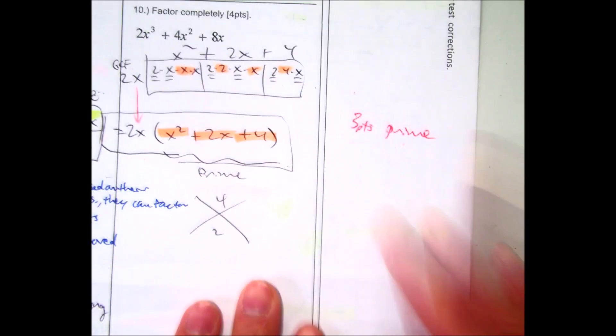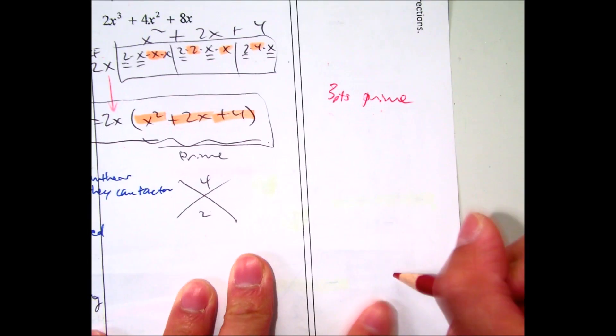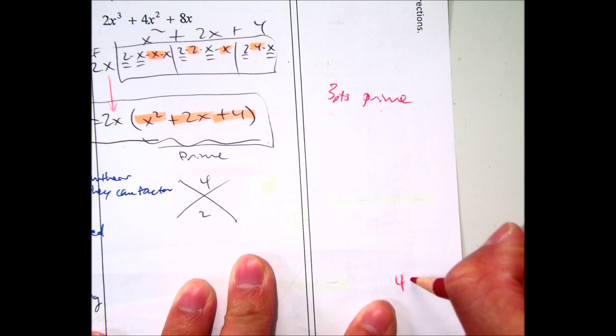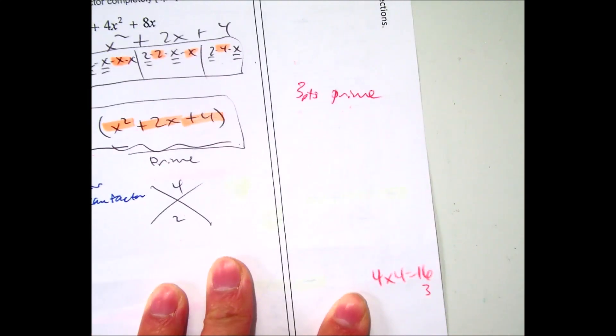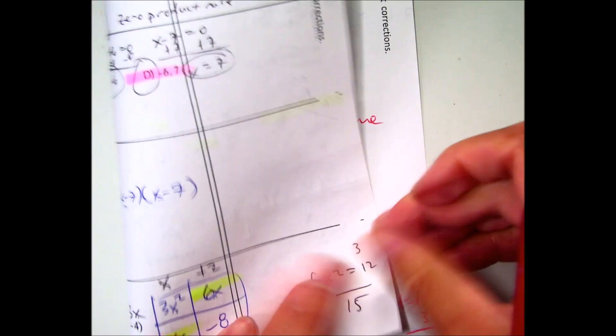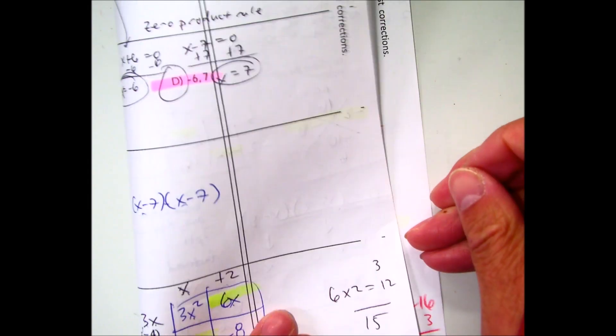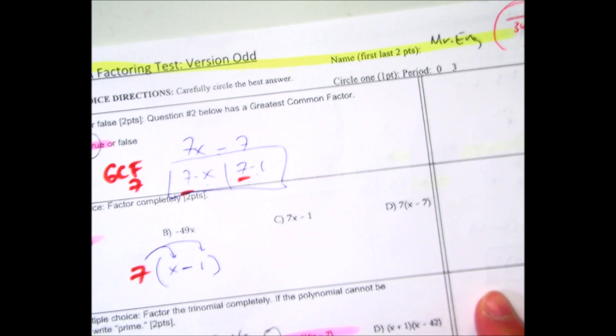That side had four free response questions at four points apiece, so that's 16, plus the three points fill-in-the-blank — that should be 19. And 19 plus 15 gives you 34. So that test was out of 34 points. I hope that was helpful for you.